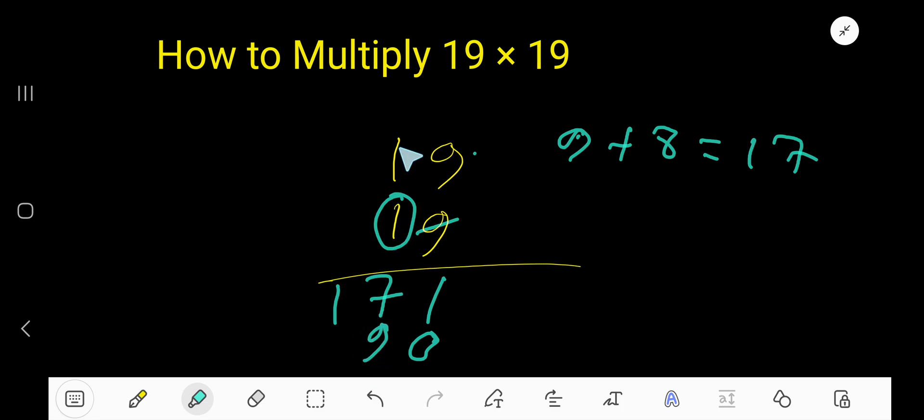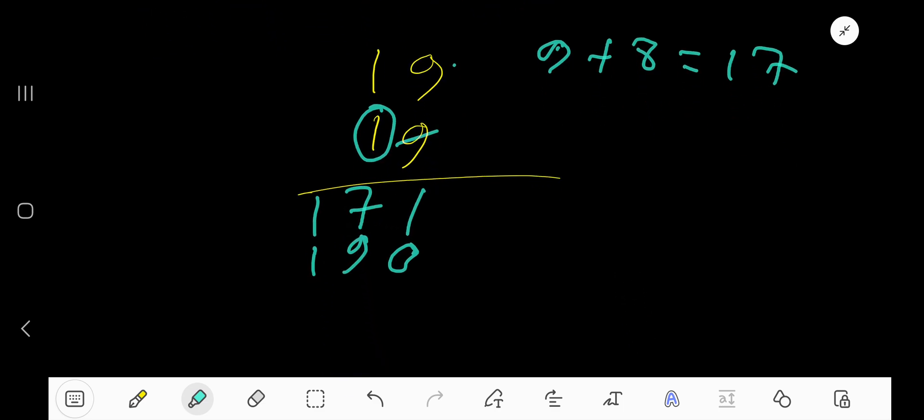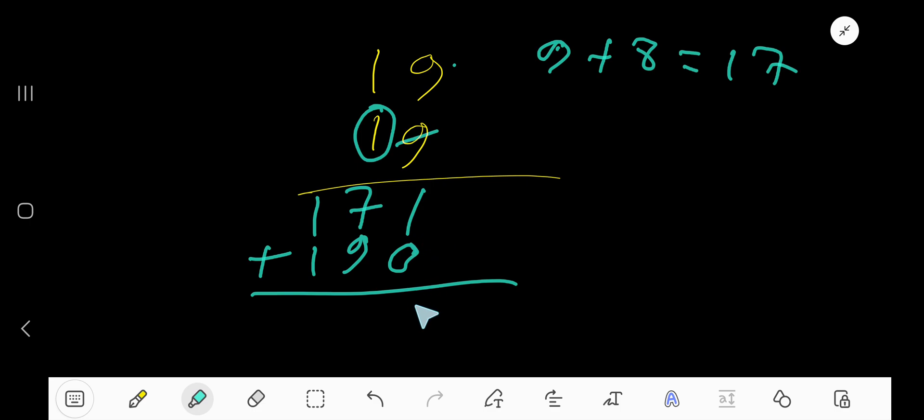1 times 9, 9. 1 times 1, 1. 1 times 1. Then 7 plus 9 equal to what?